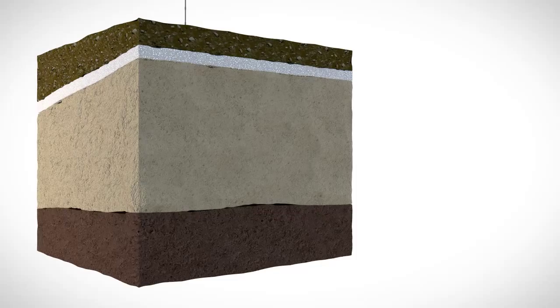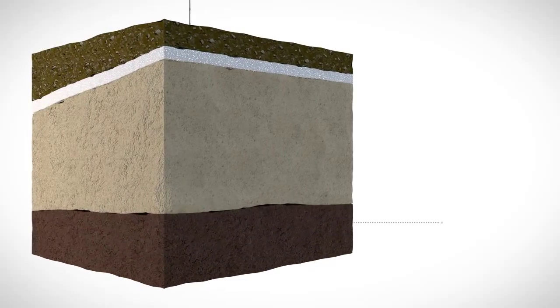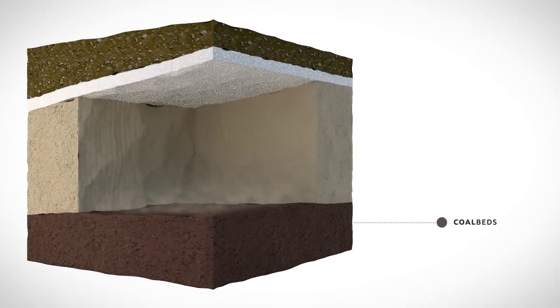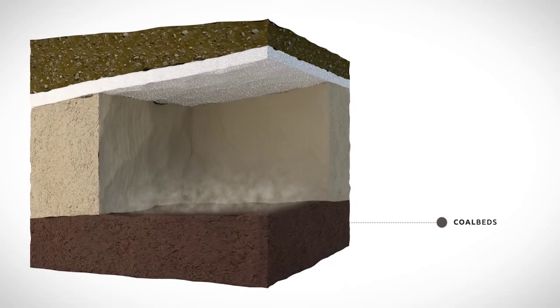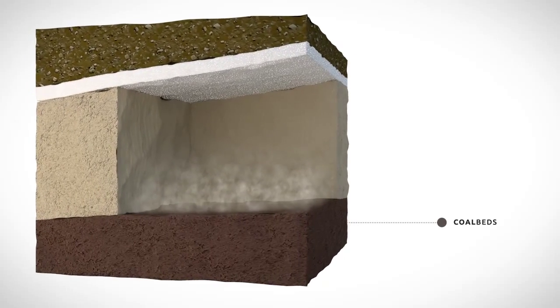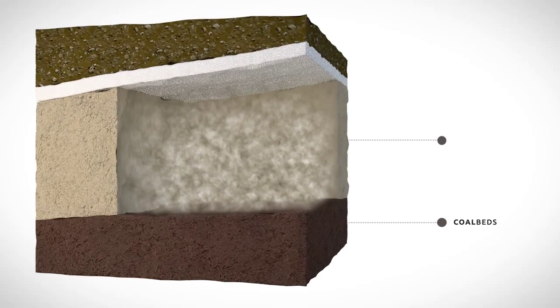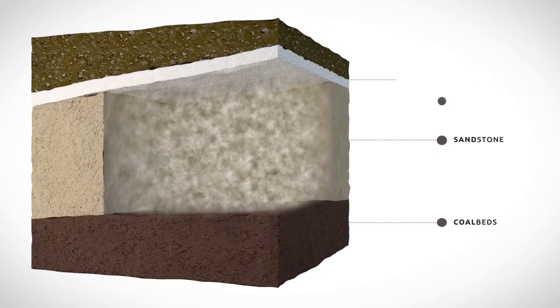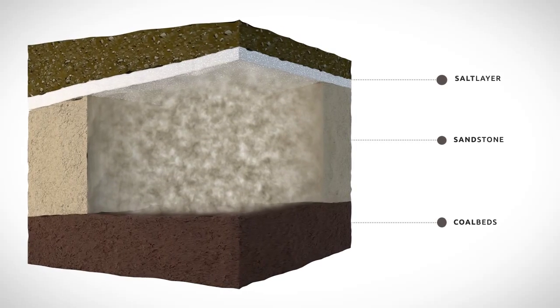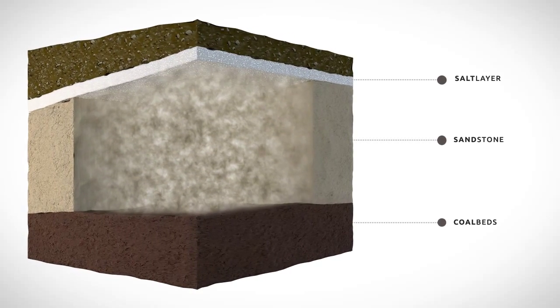Sediments of vegetation on the bottom of an ocean will, over time and under pressure, turn into coal beds. The added pressure and heat will make these coal beds release gas with a water vapor content. This gas travels upwards through the porous sandstone layer till it reaches an impermeable salt layer. Having nowhere to go, the gas builds up.